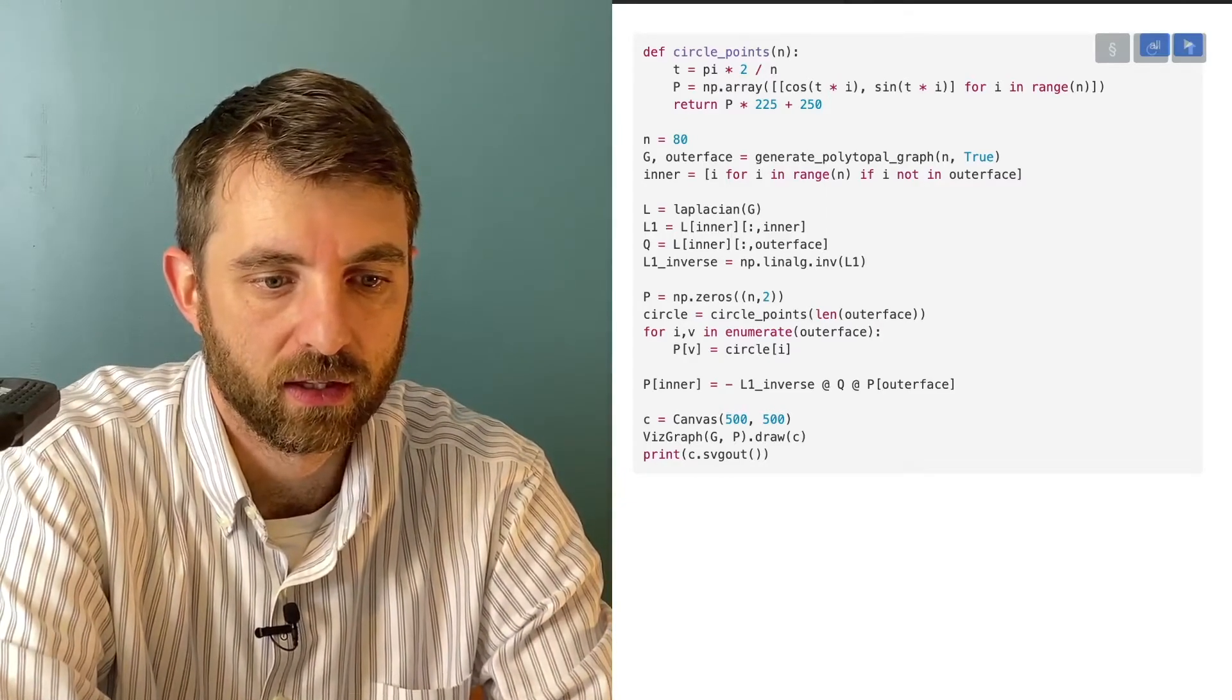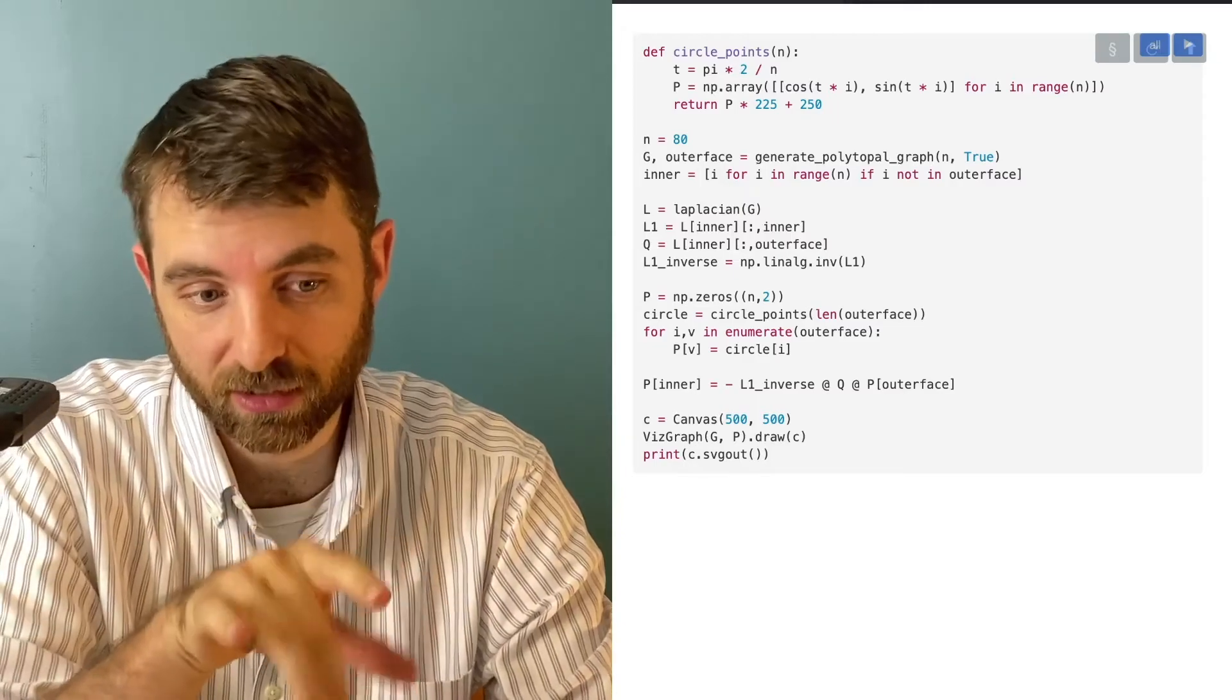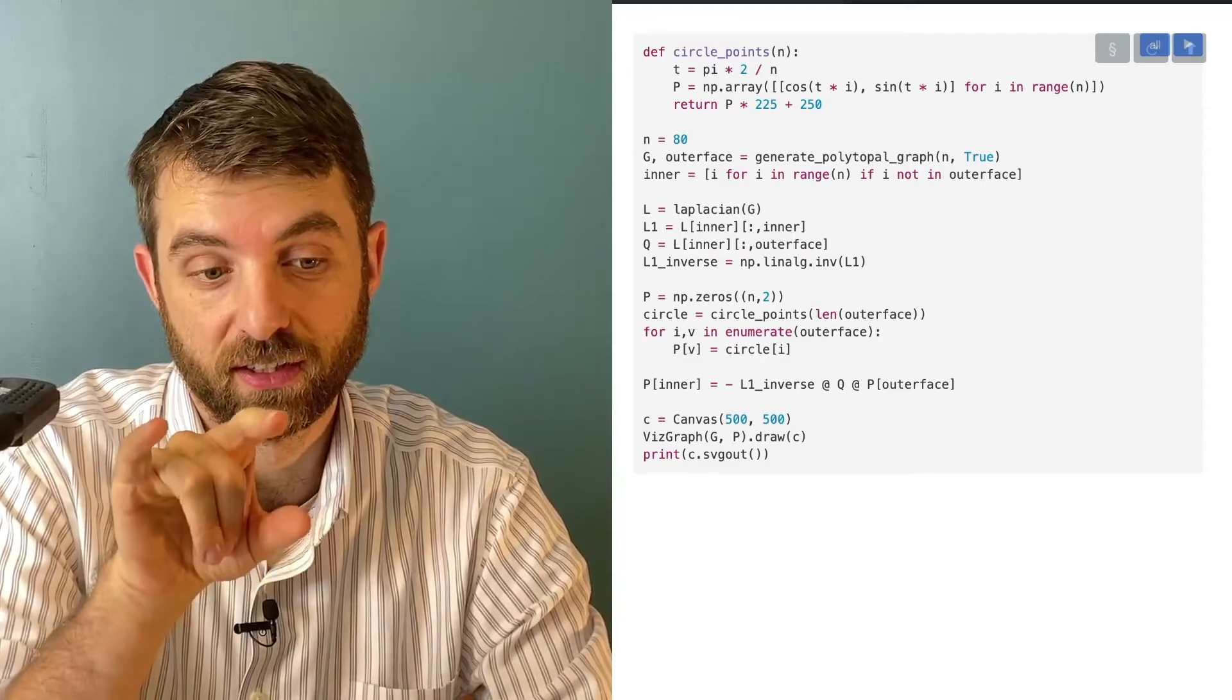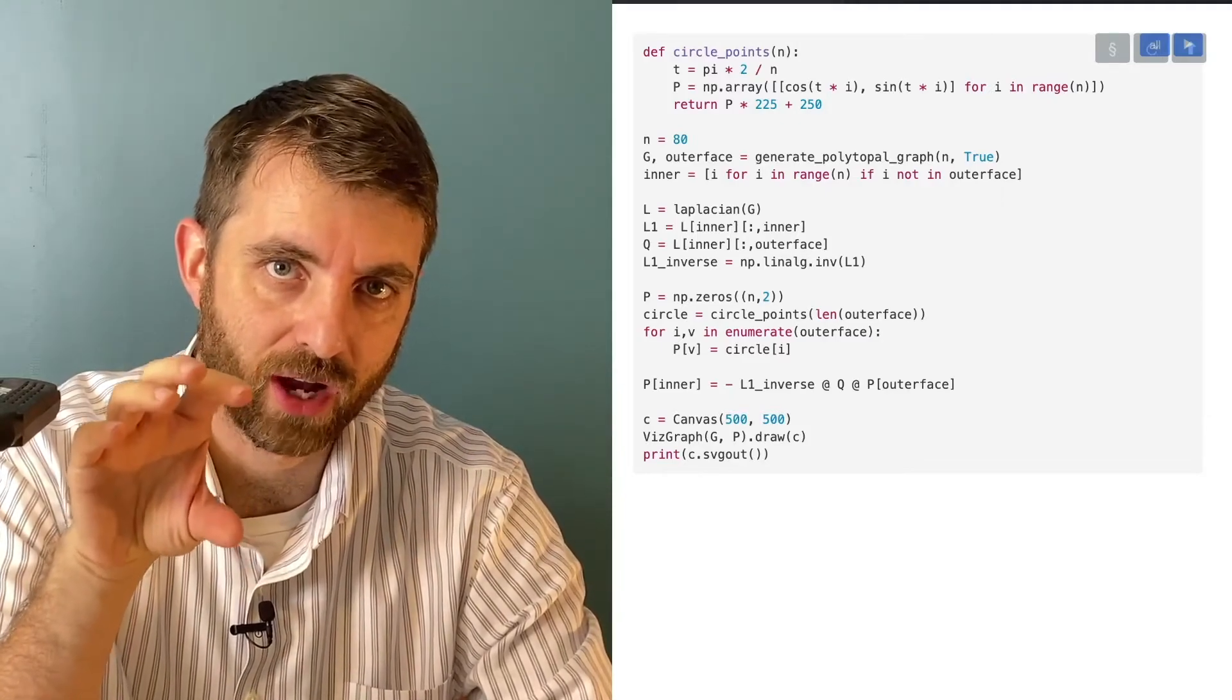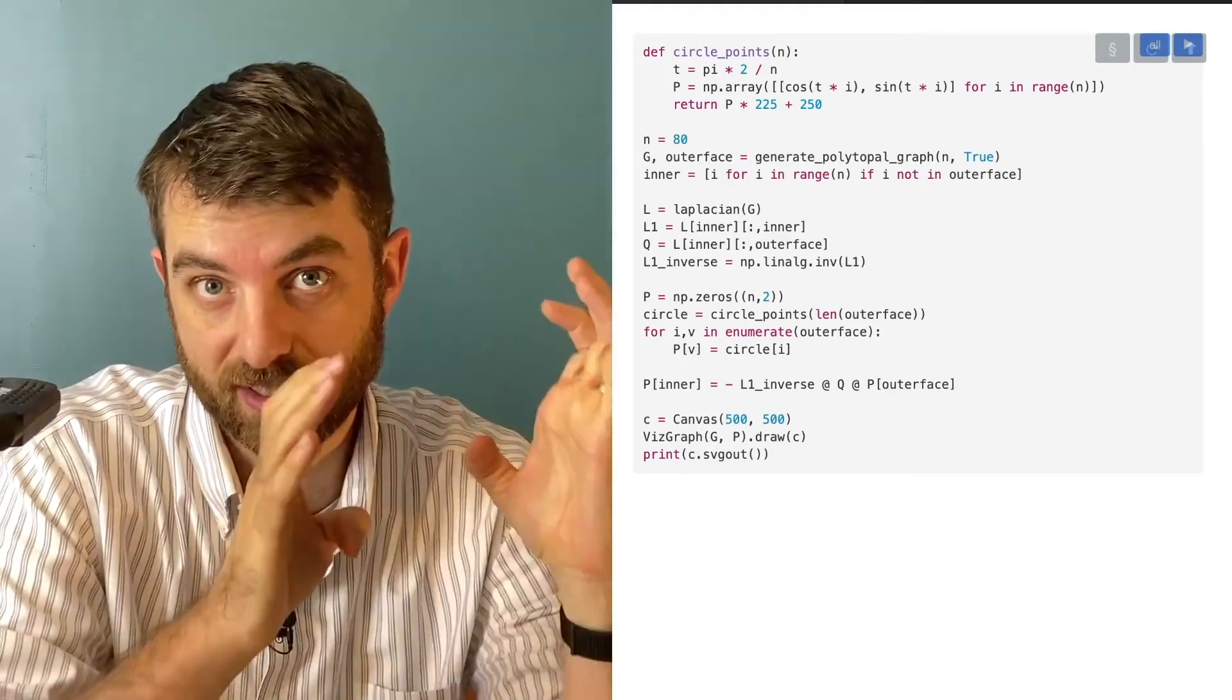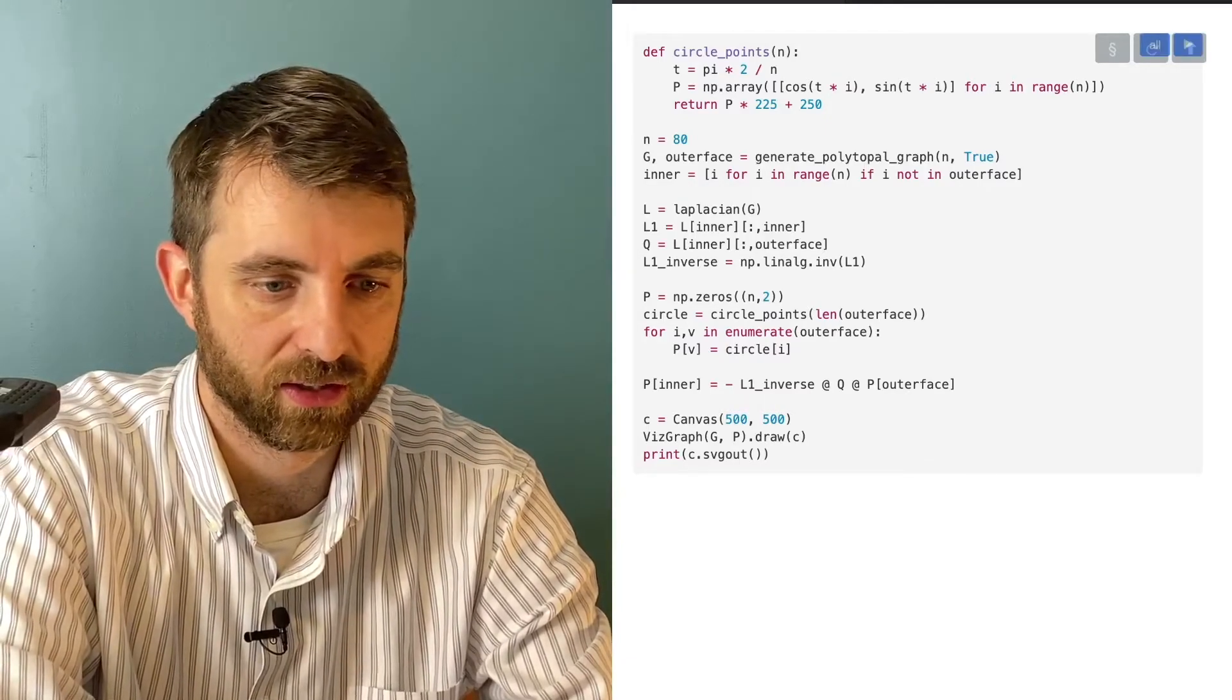And then this is something, if you haven't seen this before, this is a little bit wild. This is me assigning into a slice. So I've got P inner. Of course, inner is an entire list. It's a list of indices, but it'll do the right thing. It'll assign the right-hand side, which is a vector of length equal to inner. It'll be, I guess, if there's like k points in the interior, this will be a k by 2 array. And so it'll assign it correctly into P this way. And it's just negative L1 inverse times Q times P on the outer face, whereas the positions of the points on the outer face, which we just assigned to be on a circle. Okay. And the last part is just to draw a picture, creates a canvas and a little thing here. Let's run it. I think it works. I tried to do this one live and it went very badly. That's why I've given you the cooked one here.